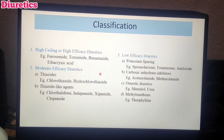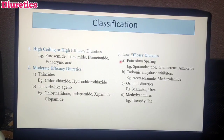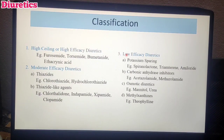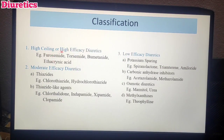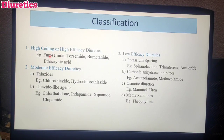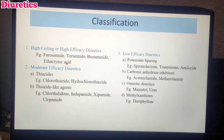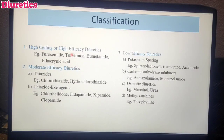Next, Classification. The main category — marked as the heading — is High Ceiling Diuretics, also called High Efficacy Diuretics. These drugs have high efficacy. For example, drugs like furosemide, torasemide, bumetanide. If you look at these drugs, the ending is '-ide' — amide, amide, amide, anide. So we can use a mnemonic. Another drug is Ethacrynic Acid. These are High Ceiling Diuretics.